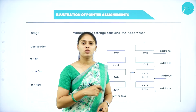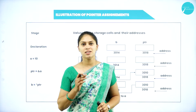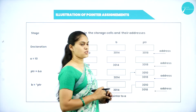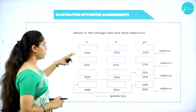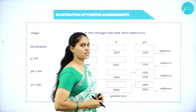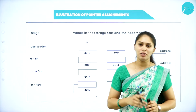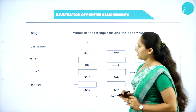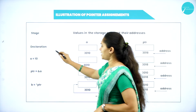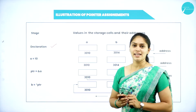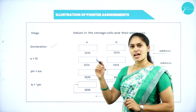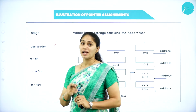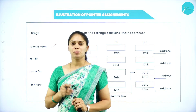Let's see the memory simulation using a pointer. I have three variables: a, b, and ptr. A and b are normal variables, and ptr is the pointer variable. The addresses are: 3010 for a, 3014 for b, and 3018 for the pointer variable ptr. These addresses are randomly generated by the computer — no need to worry about them.